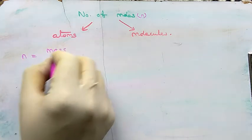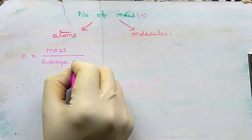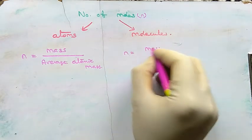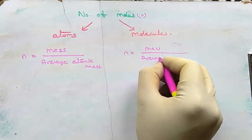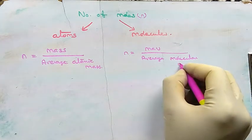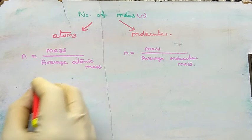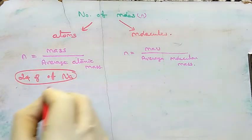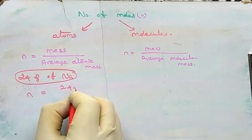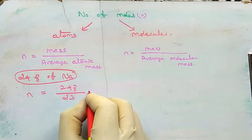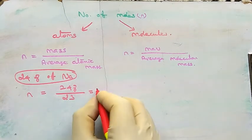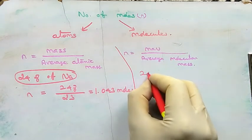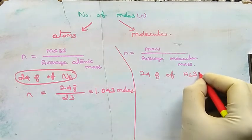To calculate the number of moles for atoms: n = mass ÷ average atomic mass. For molecules: n = mass ÷ average molecular mass (also called relative molecular mass). For example, to find the number of moles of sodium in 24 grams: n = 24 ÷ 23 = 1.043, so 1.043 moles of sodium are present in 24 grams.